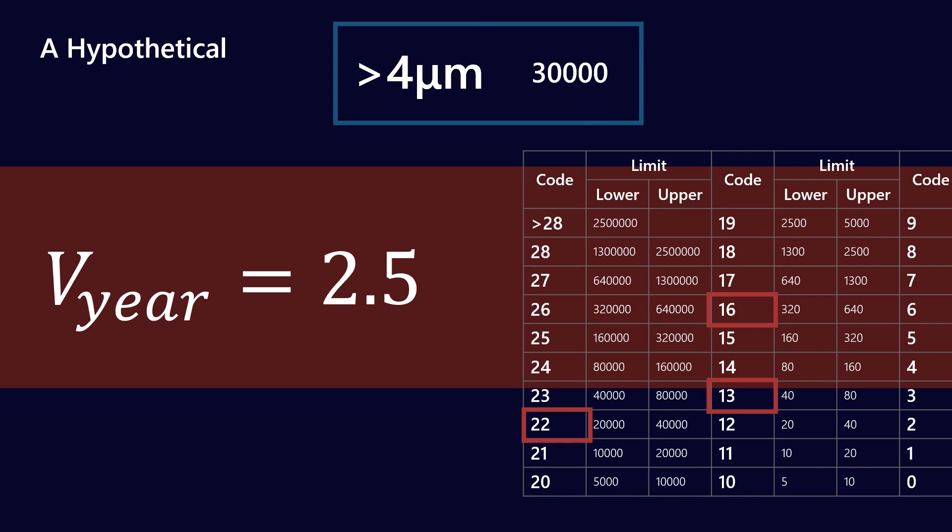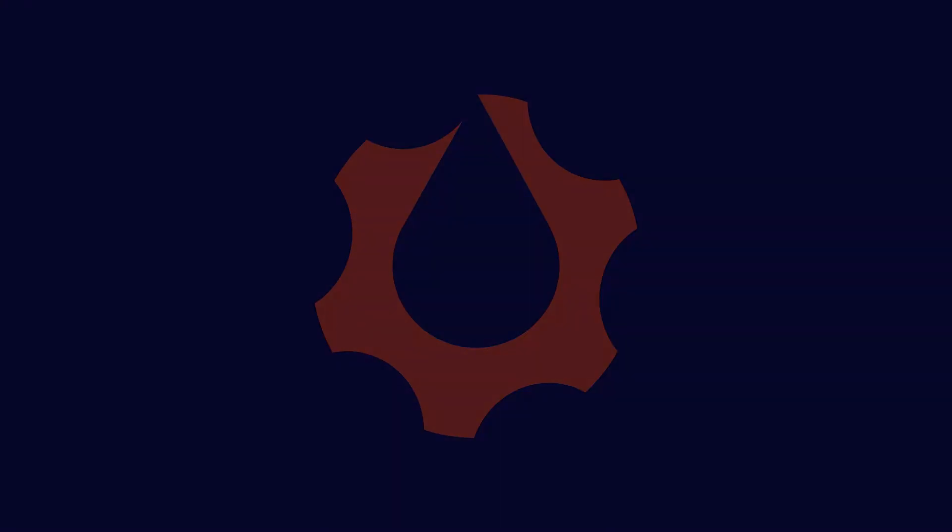And I highly encourage you to go to the Noria website. They've got some really good life extension tables. They're very easy to use, but let's say, for example, for a hydraulic application, you can look up and say, if my oil is a 18, 16, 13, and I were able to clean it up by two ISO codes, what kind of improvement in equipment life can I expect? So I really encourage you guys to look up that.